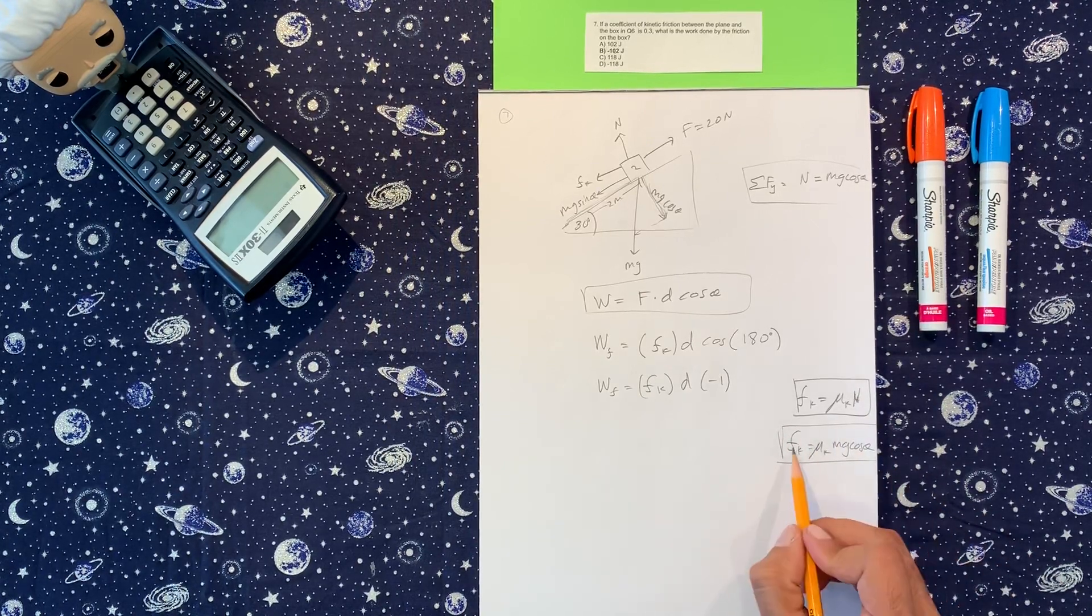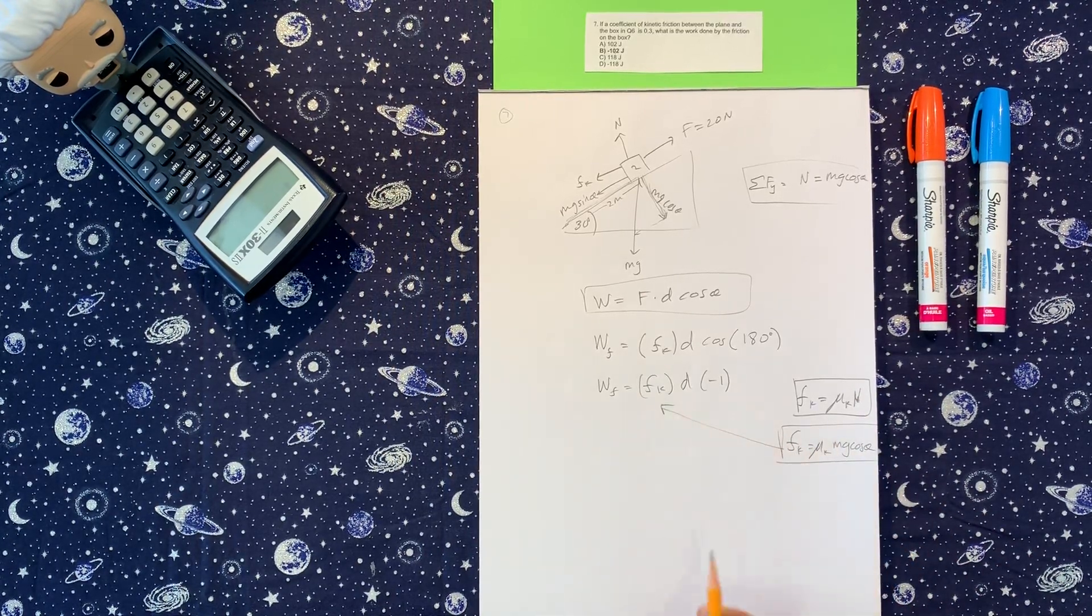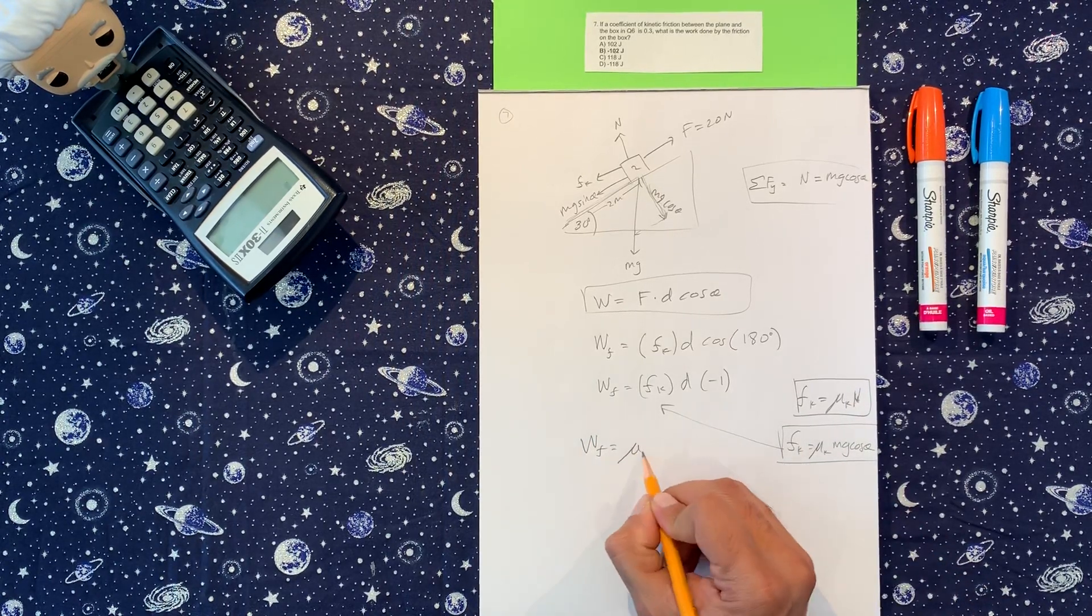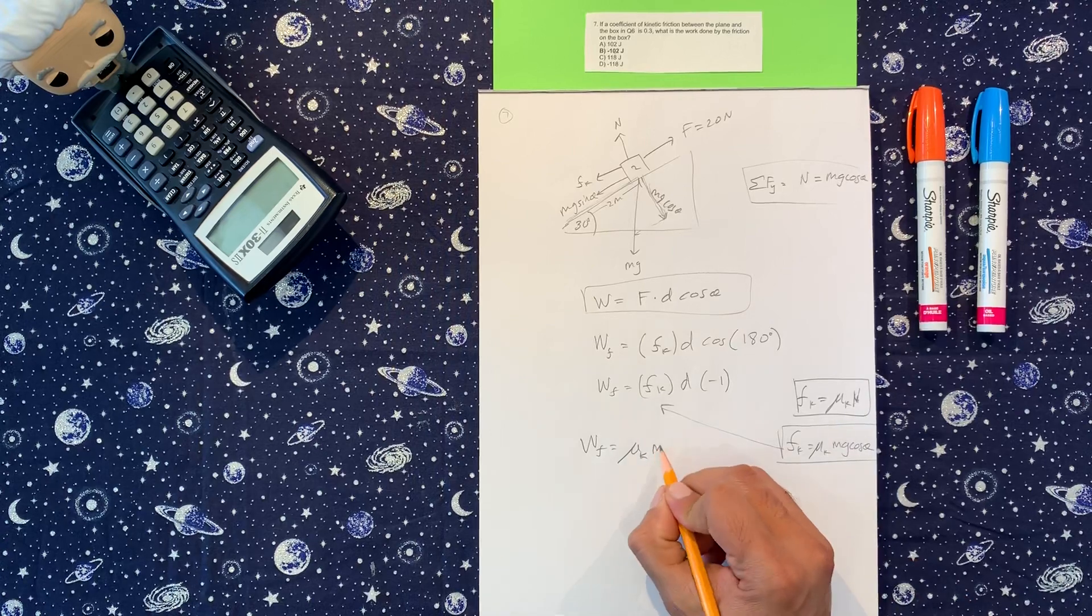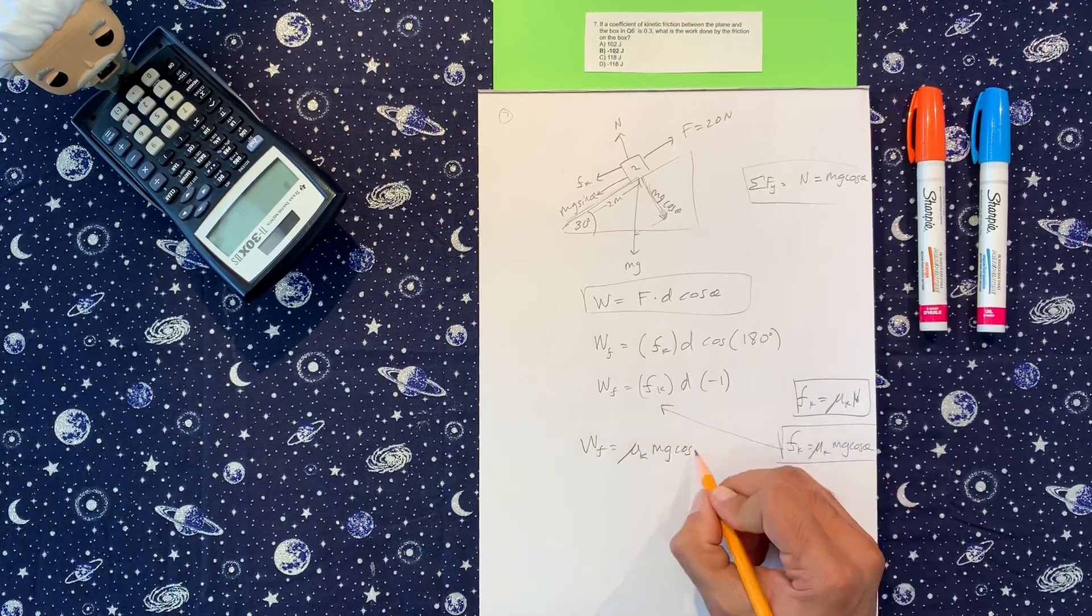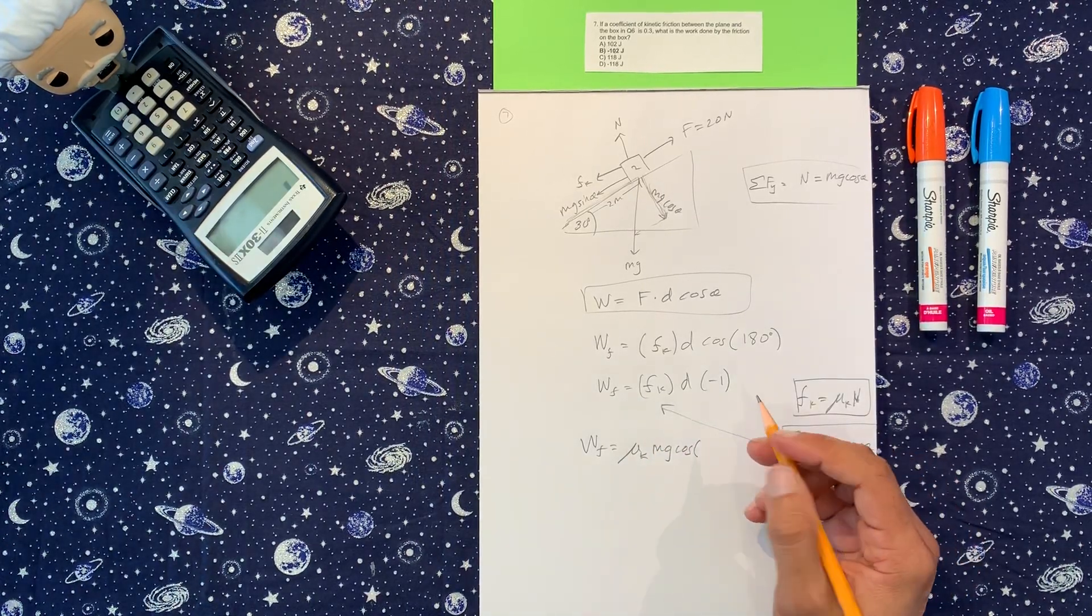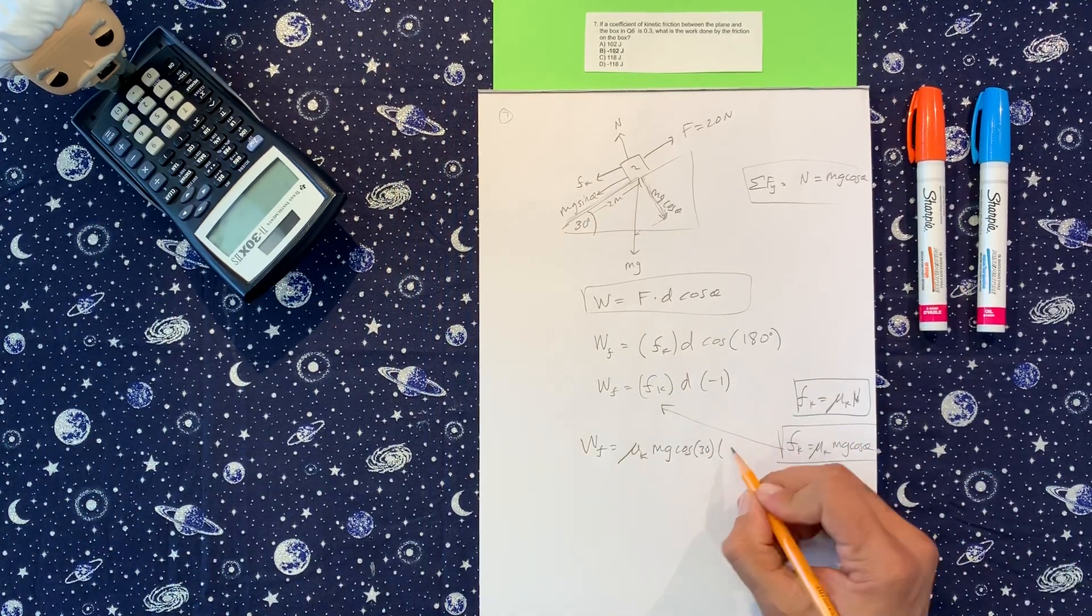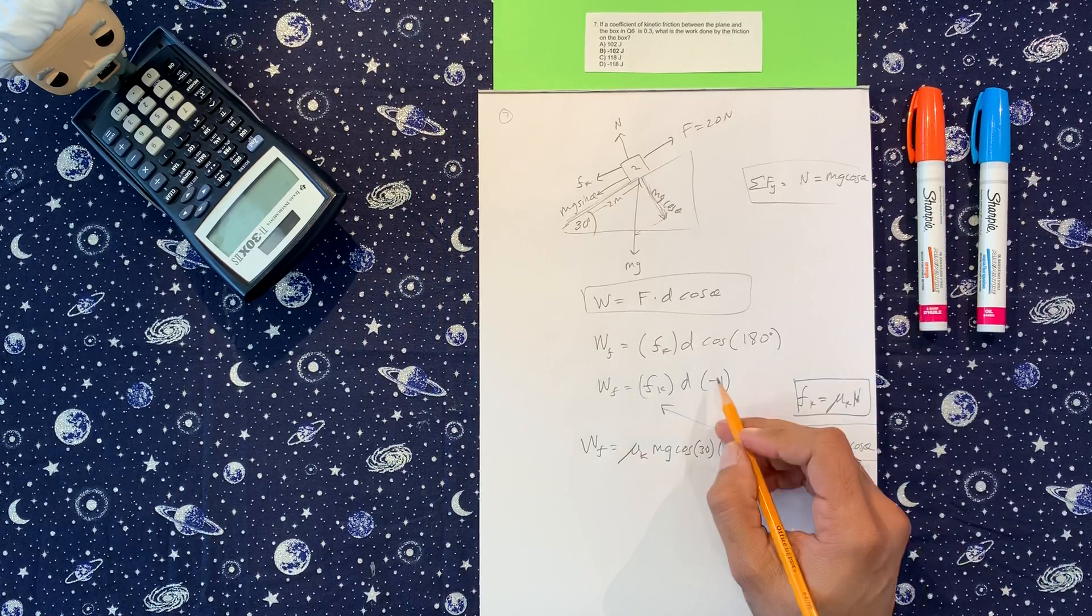Now we're going to replace that in here. So we got work of friction is equal to mu k, mg cosine of, let's write the angle in, which is 30. And our displacement is 2. Oh, and negative 1. Very important.